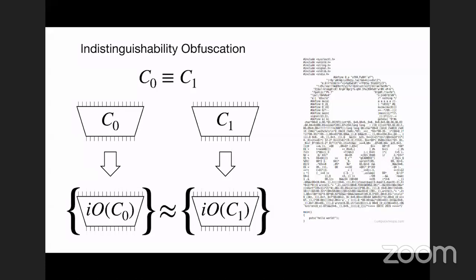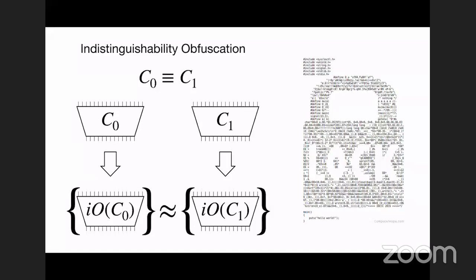We rely on the hardness of the learning problems over standard lattices. This essentially reduces the task of constructing IO to just constructing Split FHE, which is a much simpler primitive. We then show that Split FHE itself can be constructed using a standard homomorphic encryption scheme, which is something in cryptography we are all accustomed to.